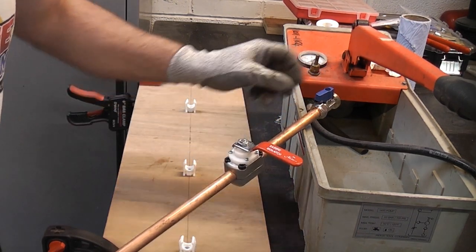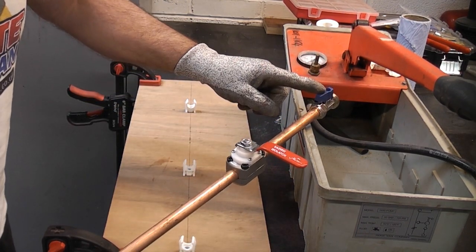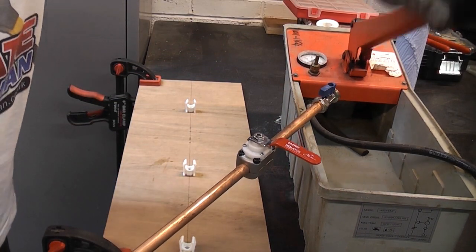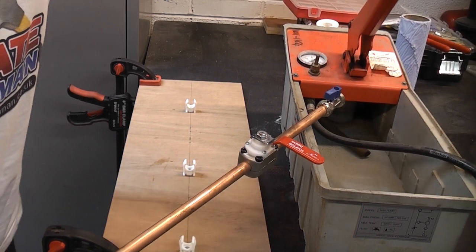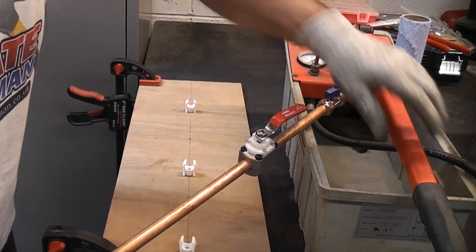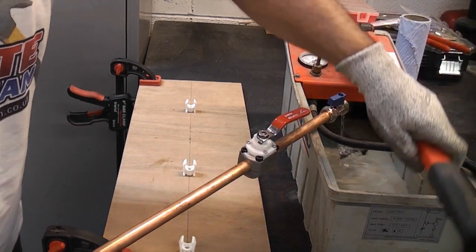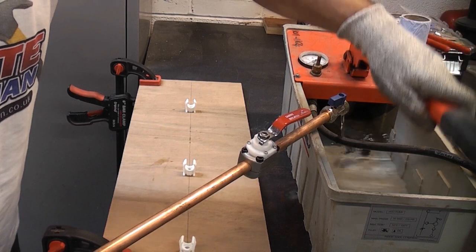So to start off with, I'm going to ensure the isolation valve on the end is open, and then I'm going to fill the pipe up with water by pumping the handle on the test rig. Also make sure that valve is open. This is just purging out all of the air.